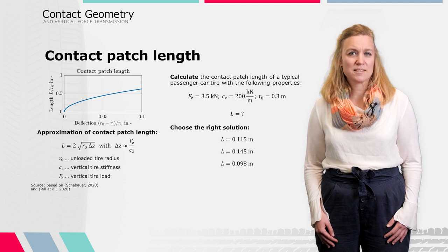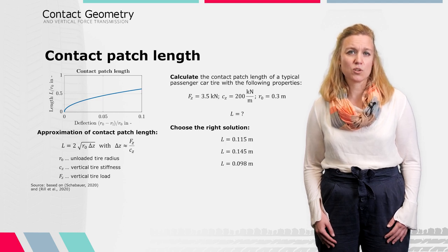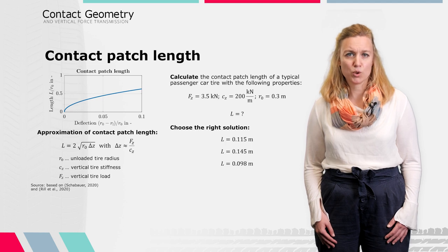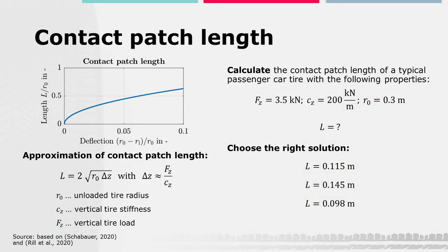To give you a better sense of the dimensions of a typical contact patch, we have created an example for you. On the left side, there is the approximated relation between the contact patch length and the influencing factors unloaded tire radius R0, vertical tire stiffness CZ and the vertical tire load FZ. This approximated behavior of the contact length L with respect to the deflection is shown in the figure below.